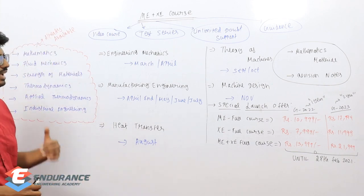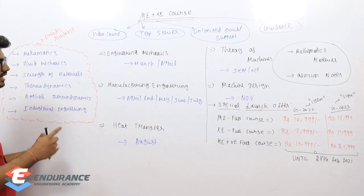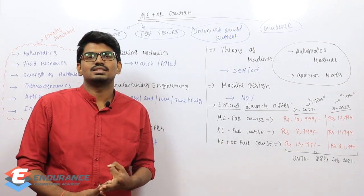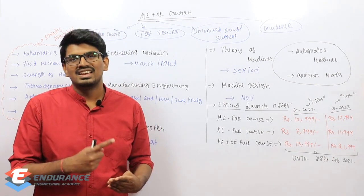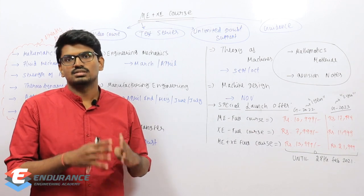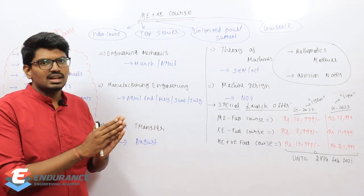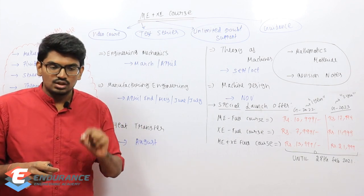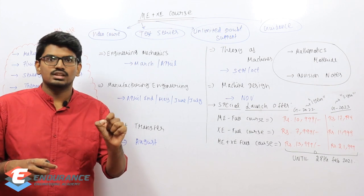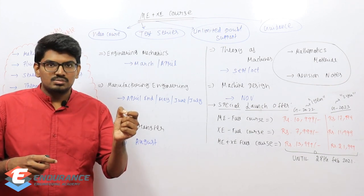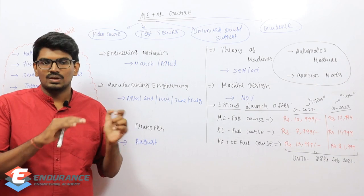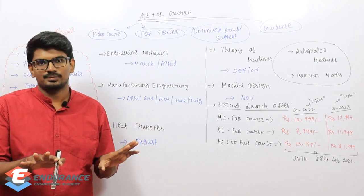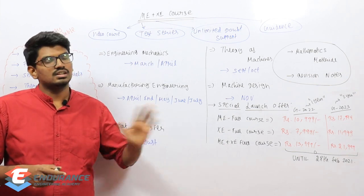Both the ME course and XE course are available. XE covers XCA (Mathematics), XCB (Fluid Mechanics), XCD (Solid Mechanics), and XCE (Thermodynamics). For ME Mechanical, all technical and mathematical topics will be covered. For GATE 2022, aptitude is not included due to time constraints, but for GATE 2023, aptitude will be included.